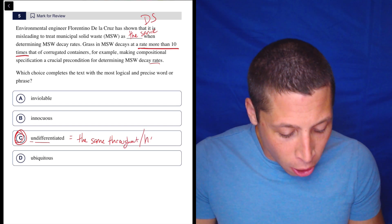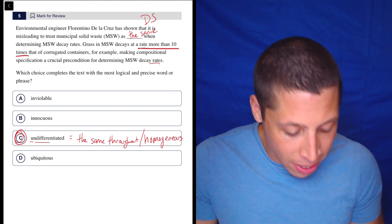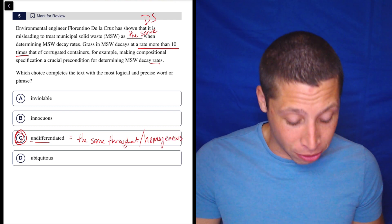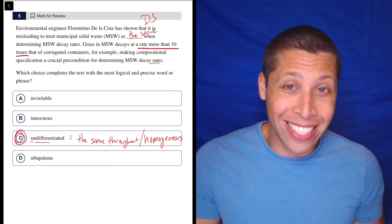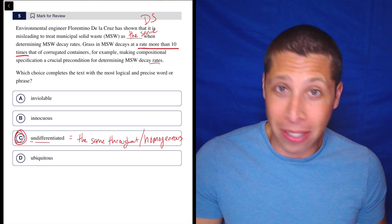So yes, undifferentiated means the same throughout, and I'm going to throw another big word at you while we're at it. How about the word homogenous, homogenous or homogenous, depending on how you want to pronounce it. That's another good word to throw into your SAT vocab list. It basically means the same thing.